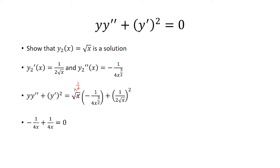Now with 1 over 2 root x squared, we square 2 to get 4, and then square root of x squared is x. Adding those two together, we get 0. And so y sub 2 of x equals square root of x is a solution.